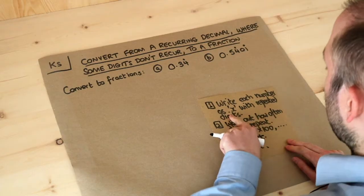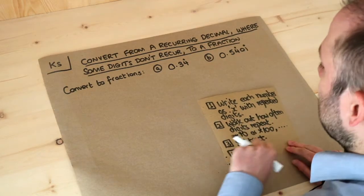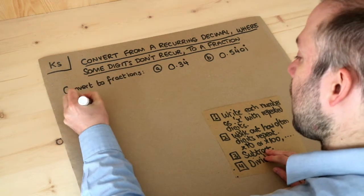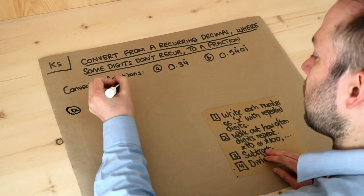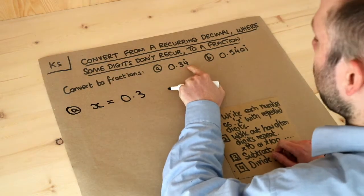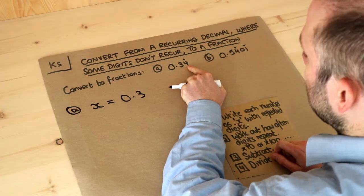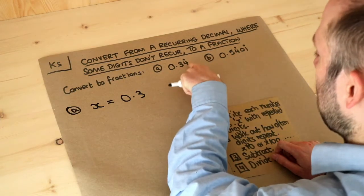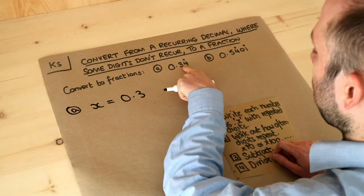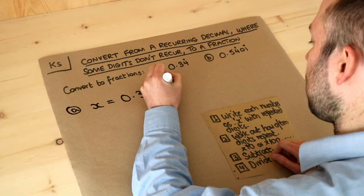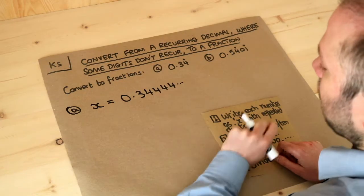So the first step is to write each number as x with the repeated digits. Now what does this recurring dot mean here? That just means that you're going to repeat that particular digit, and if there's only one dot here rather than two like here we just repeat that digit again and again. So it's 0.3444444. So let's write out the four just a few times just to show that it's repeating forever.